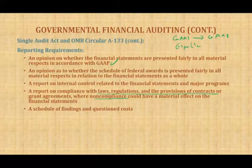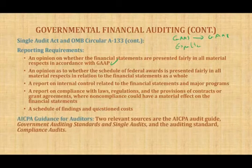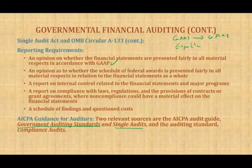The SAA requires several reports because users need assurance that financial statements are sound, internal controls are adequate, the entity is in compliance with government auditing standards, and all expenditures are distributed as required. Last but not least, two relevant AICPA guidance sources for auditors are the AICPA Audit Guide on Government Auditing Standards and Single Audits, and the Auditing Standard Compliance guide. These provide additional guidance to help auditors of governmental entities subject to the SAA.